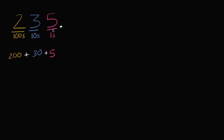So to the left you have the ones place, then the tens place, then the hundreds place. And if you were to keep going, you'd go to the thousands place. But if you go to the right of the decimal point, now you're going to divide by ten.